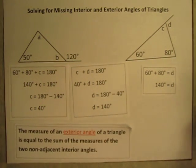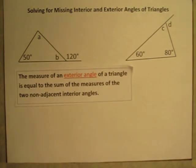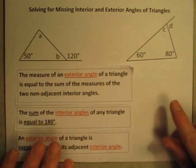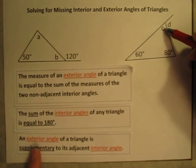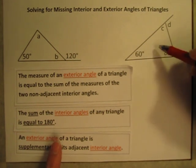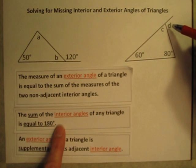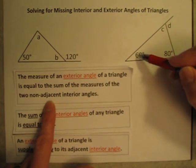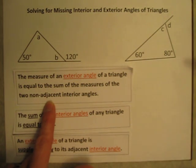So I hope that makes sense. There are lots of different ways you can solve these. But they are all going to involve these three pieces of information here. That the adjacent angles here are supplementary. That the three angles inside a triangle, the three interior angles, add up to 180. And that an exterior angle is equal to the other two non-adjacent interior angles added together.